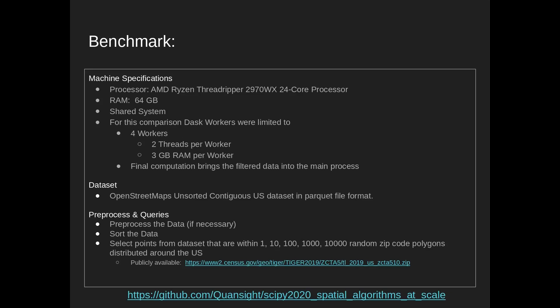Here are the machine specs used in this benchmark: a 24-core Threadripper processor with 64 gigs of RAM. It is a shared system, but we are confident the results are representative. We further limited computational power with Dask to four workers, each with two threads per worker and three gigs of RAM per worker. The final computation in each case brings the filtered data back into the main process.